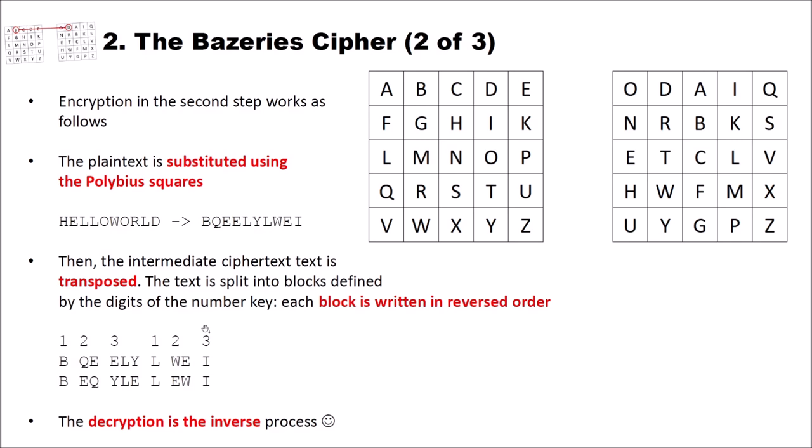for the final cipher text, we reverse these blocks. The B, of course, is only one letter. It remains a B. But the Q, E becomes E, Q. The E, L, Y becomes Y, L, E. And so on and so forth. So we obtain our final cipher text.